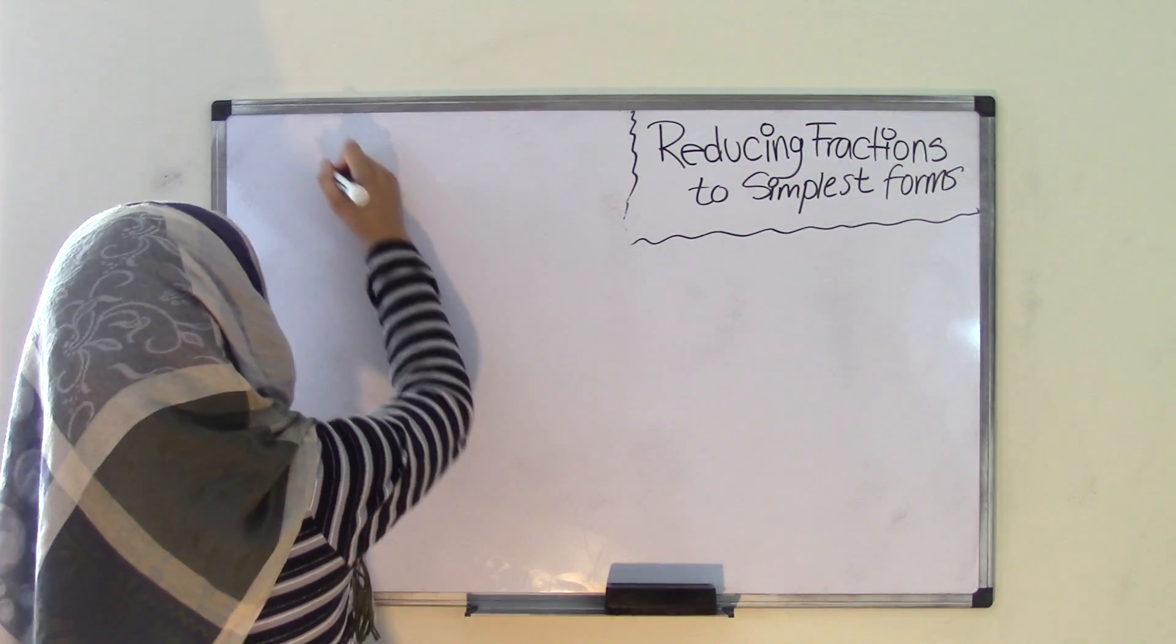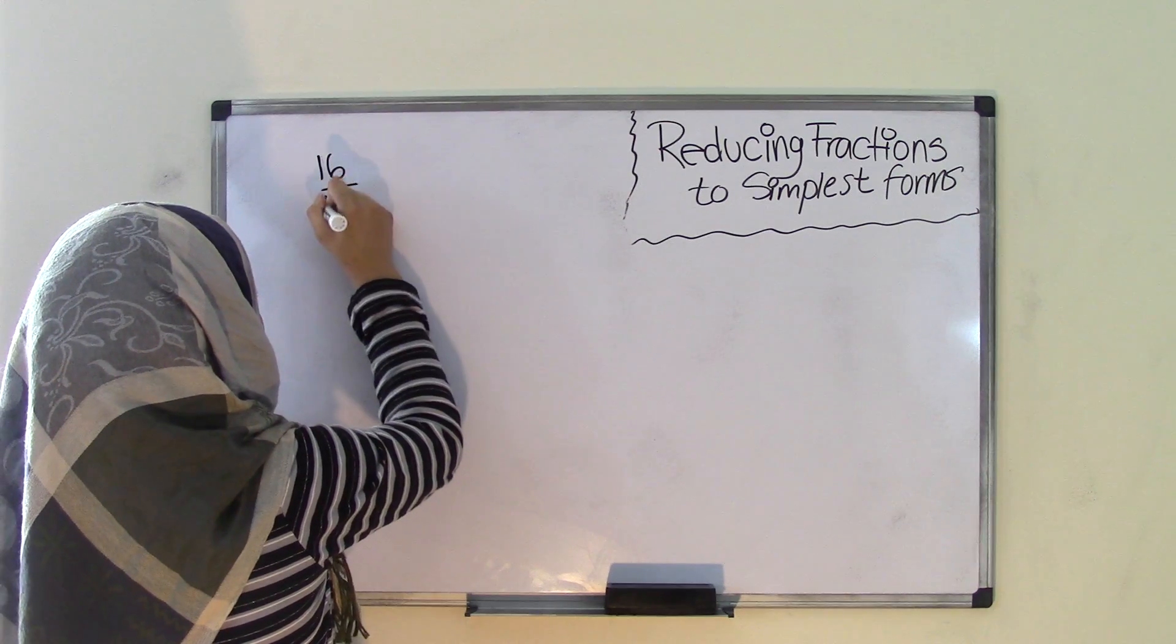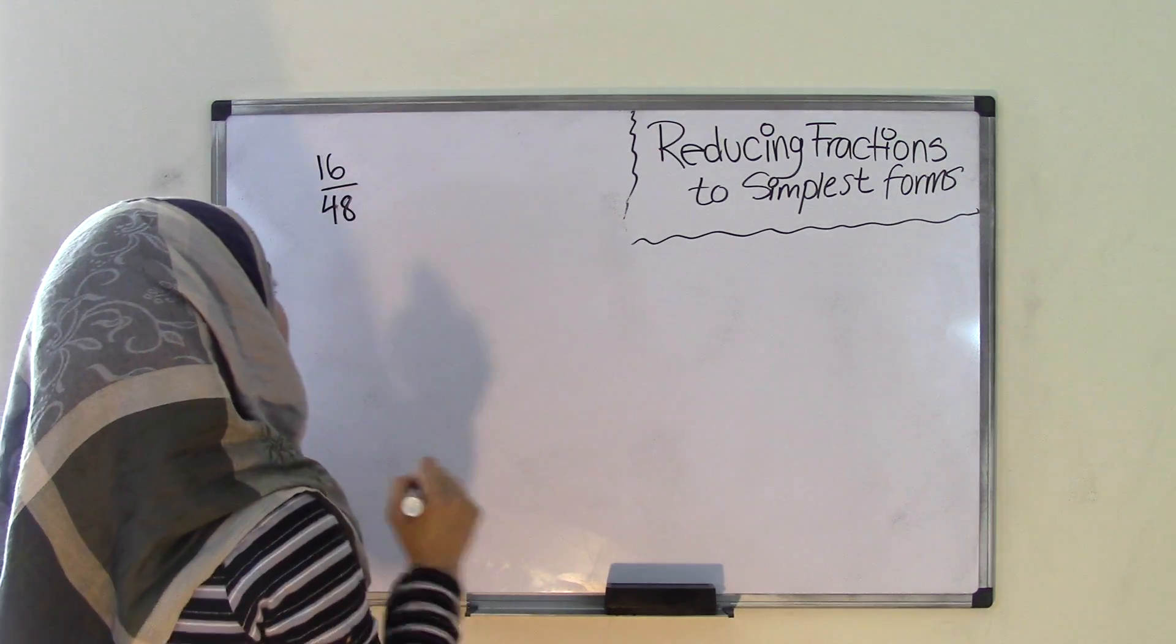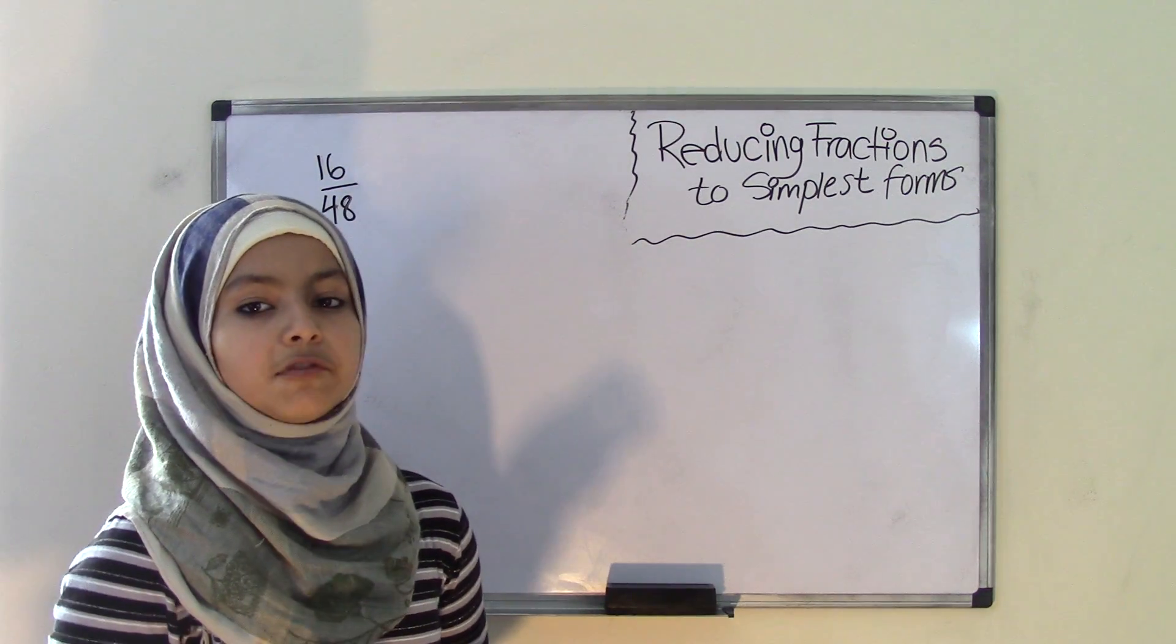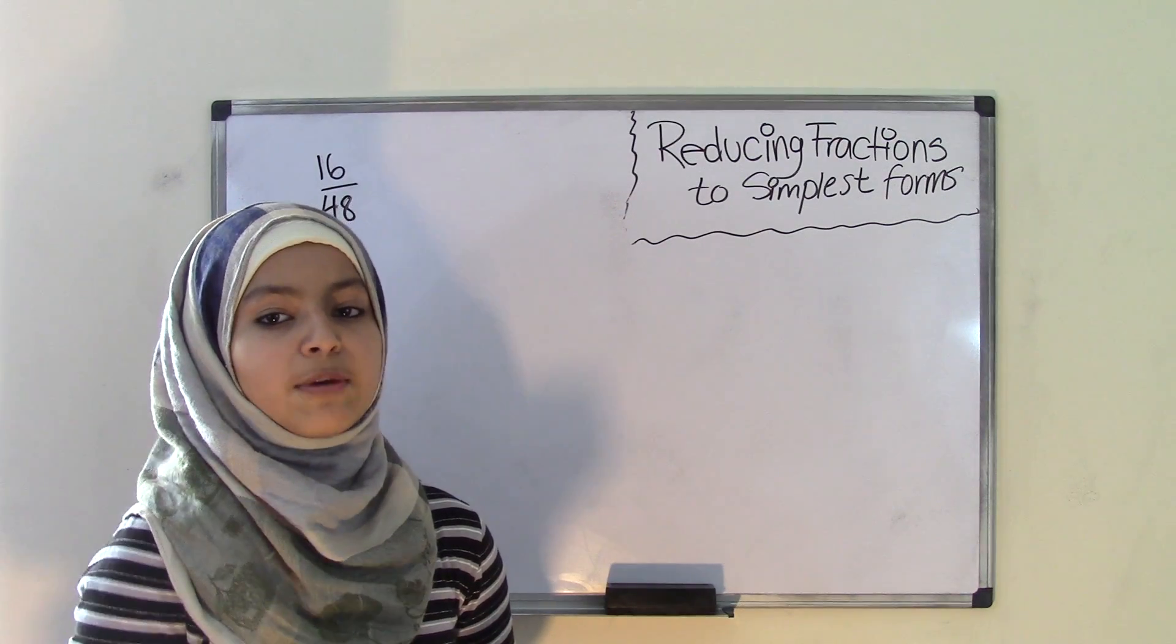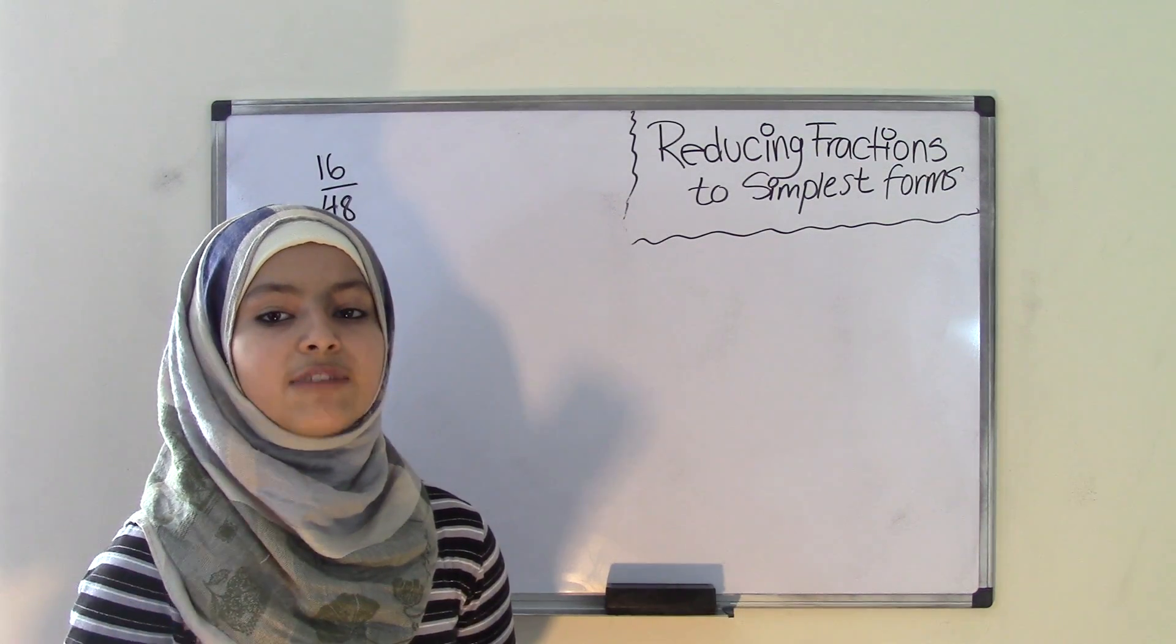Let's say you have the fraction 16 over 48. Now this fraction can be reduced and we have to find the smallest or simplest form of this fraction and we do that by dividing.